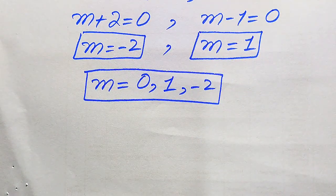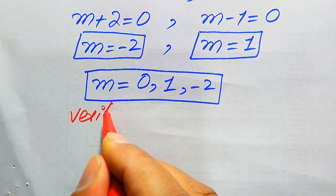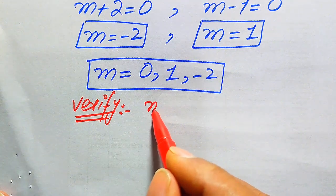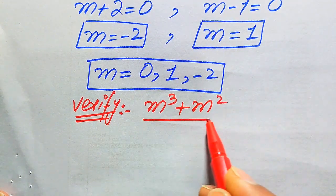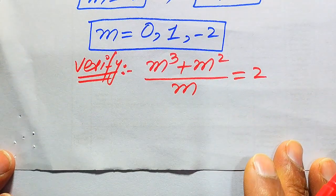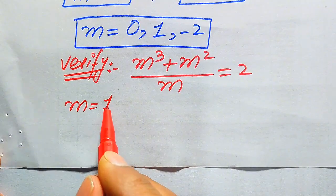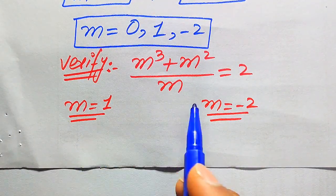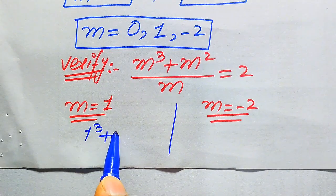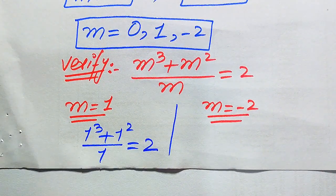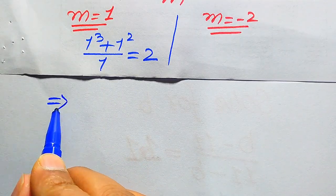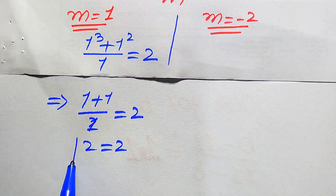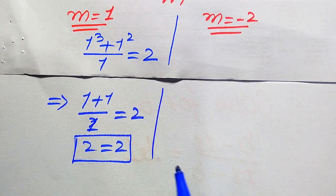Now we verify whether these roots are solutions or extraneous roots. The given equation is (m³ + m²) / m = 2. We verify m = 1 first: substituting gives (1³ + 1²) / 1 = (1 + 1) / 1 = 2 = 2. Both sides are equal, so m = 1 satisfies the given equation.